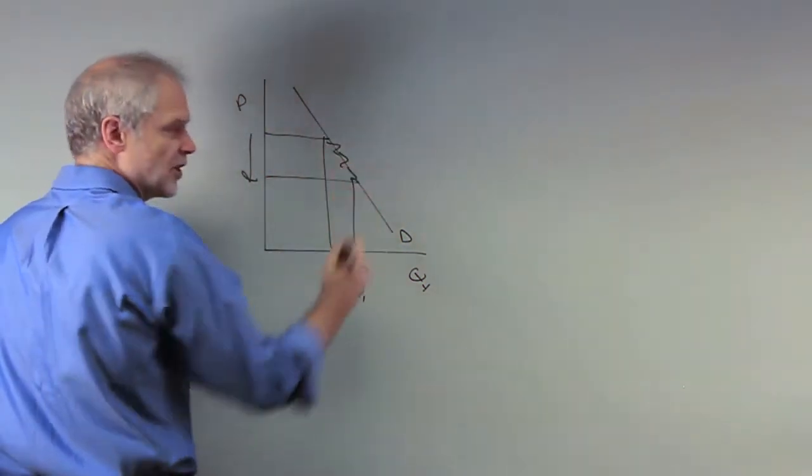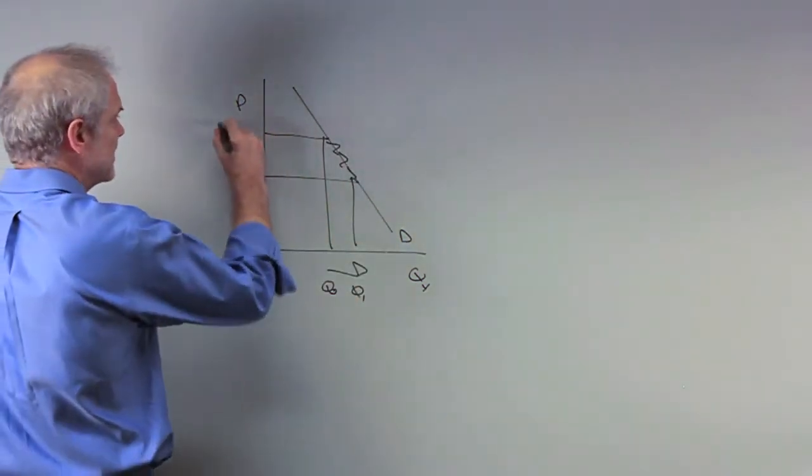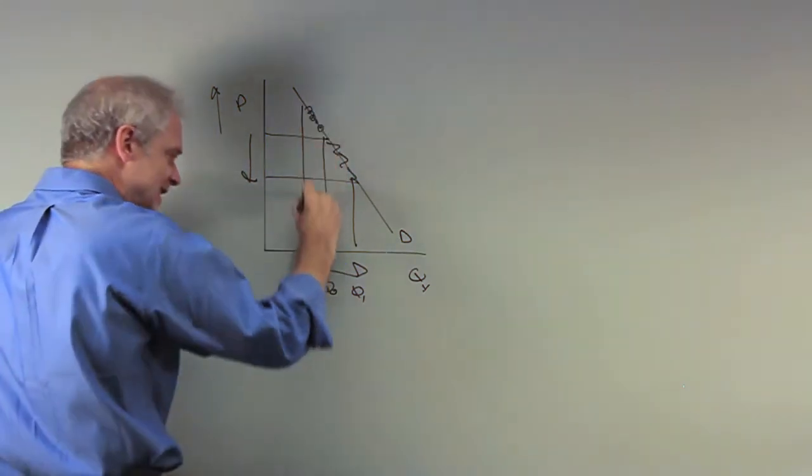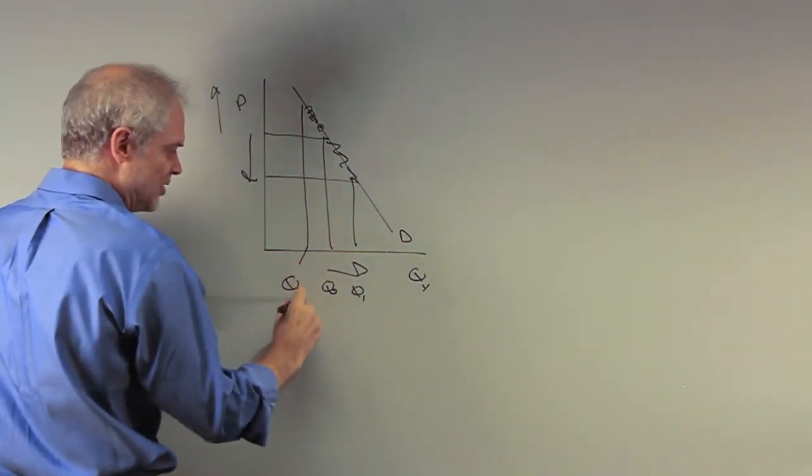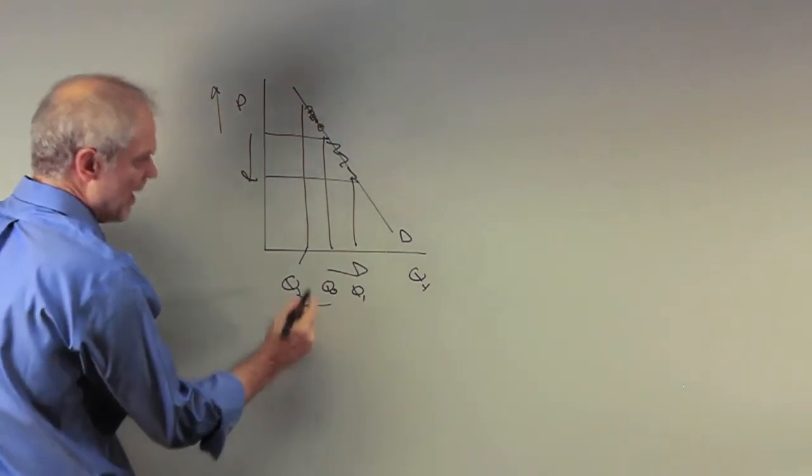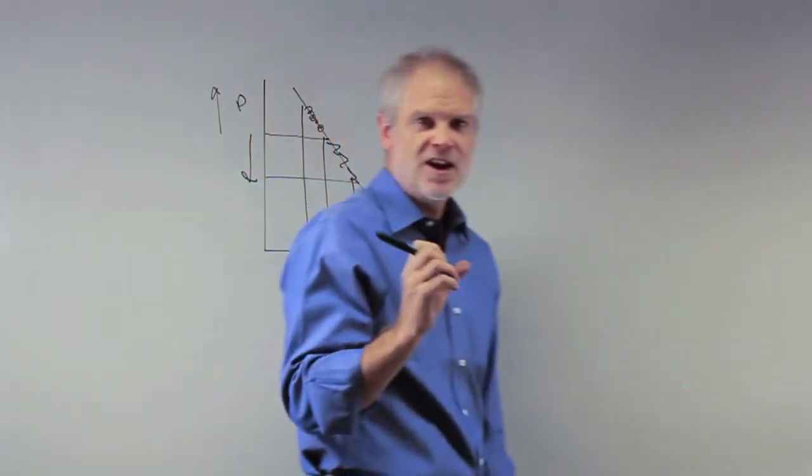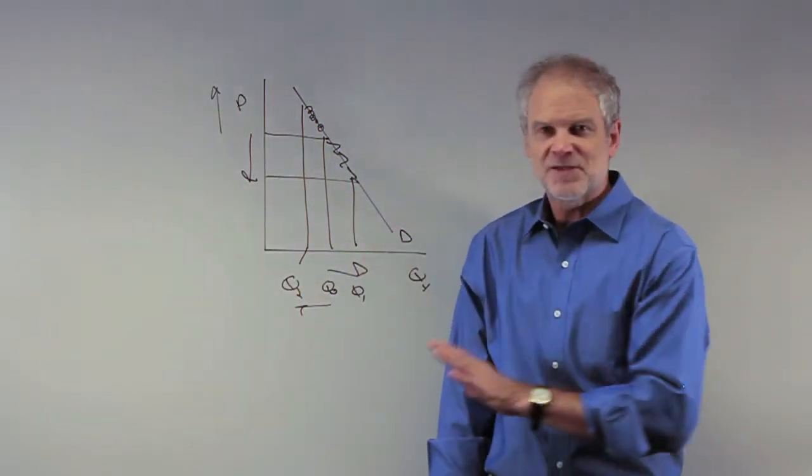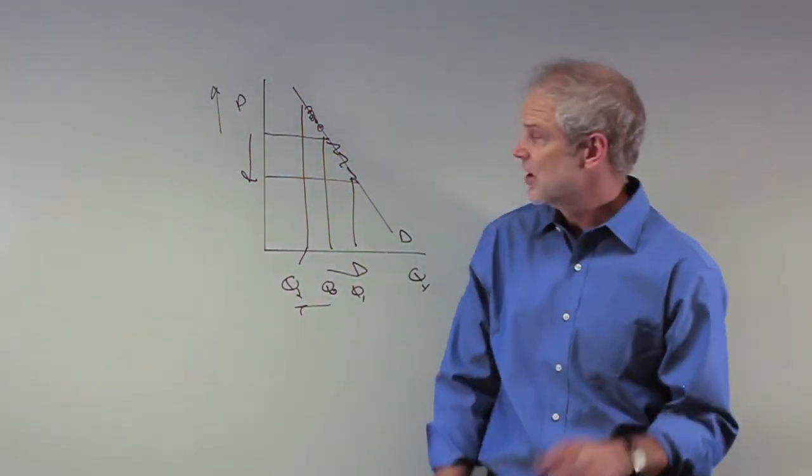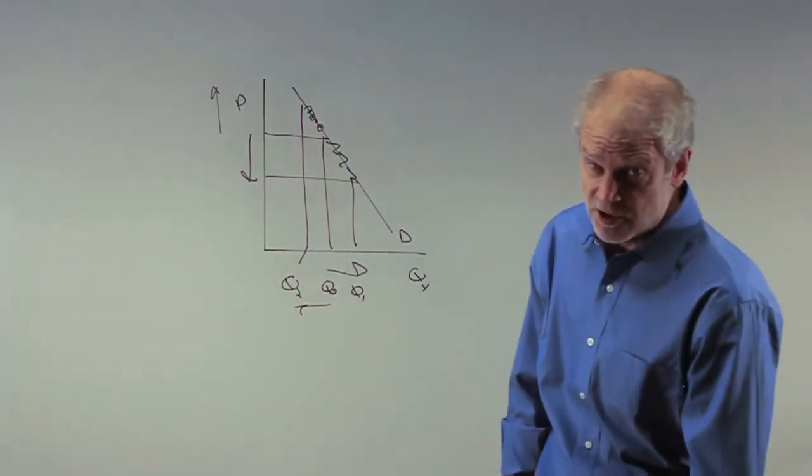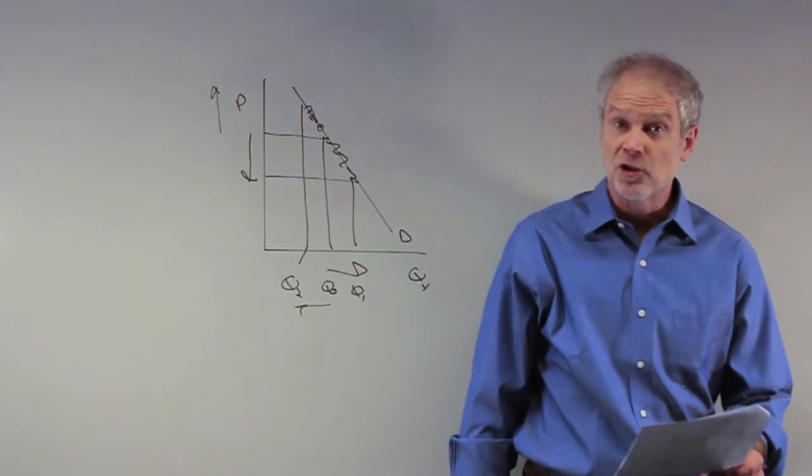But it's a movement along the curve. If I increase price, you move up the curve and see a decrease in quantity demanded. The curve has not shifted. Everything else that affects this demand curve is being held constant. The only thing moving is the price of this particular good, causing movement along the demand curve.